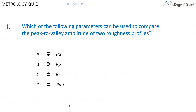Question number one. Which of the following parameters can be used to compare the peak to valley amplitude of two roughness profiles? Answer A: RA. Answer B: RP. Answer C: RZ. Answer D: RDQ. One correct answer only.